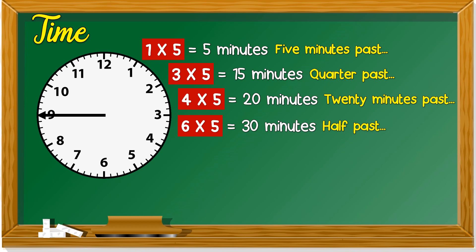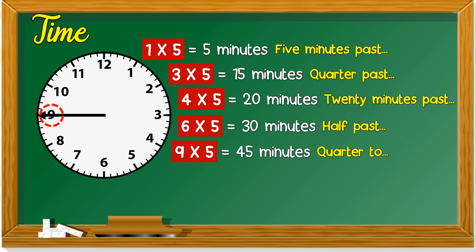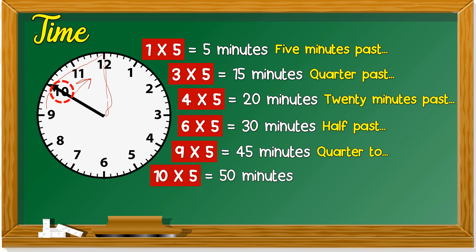When the minute hand is at 9, we get 9 times 5, which is 45 minutes — or you can say 'quarter to.' Do you know why? Because we only have about a quarter left to 12. When the minute hand is at 10, we get 10 times 5, which is 50 minutes. Or since we have 10 minutes left to 12, we can say '10 minutes to.'